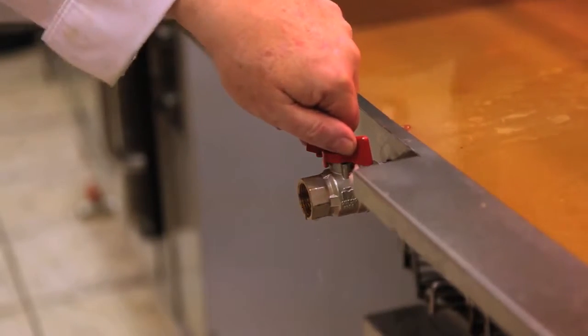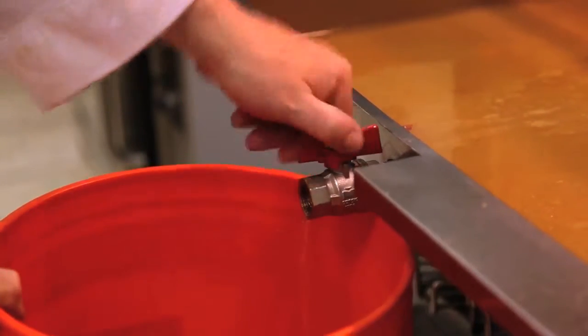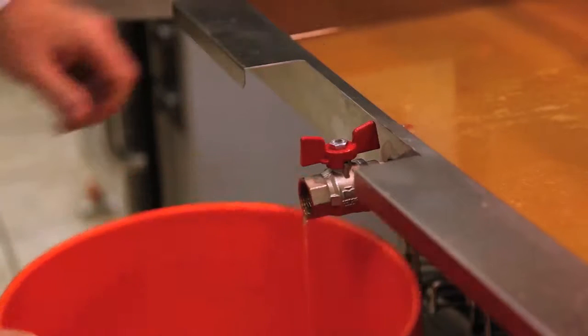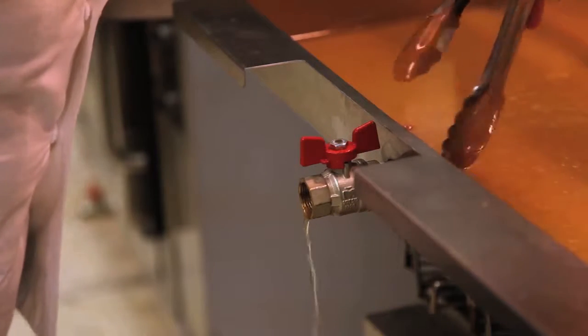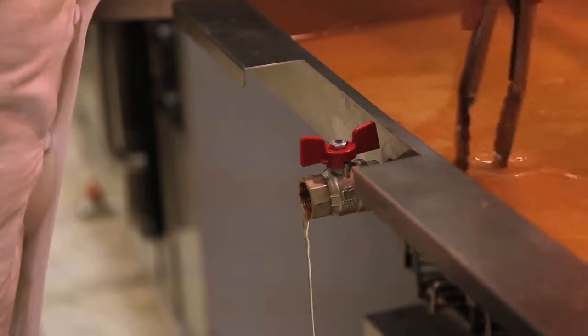Now removing the grease trough, pulling it out a short way, and draining through the faucet that's supplied in each unit. By turning the faucet to open, the oils will start to drain off.